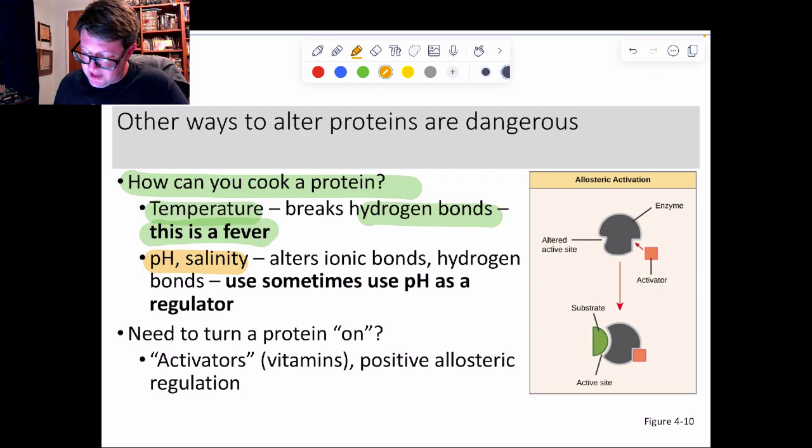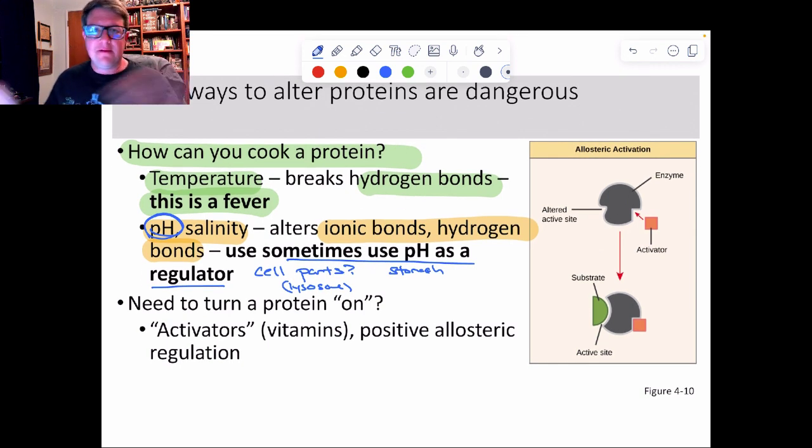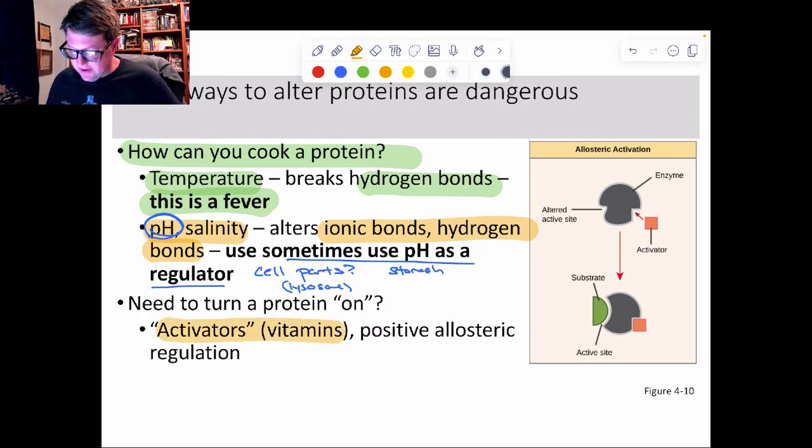Another option is we can use pH or salinity. And these are going to alter the ionic bonds or the hydrogen bonds. Salinity isn't something that we really use, but we use pH quite a bit. So pH we actually use as a regulator. So we have parts of our cells where we can worry about this, namely something called the lysosome. That's where we would see this occur. You would also see this in things like the stomach. If you happen to have a stomach, that's where we actually use pH manipulation to turn certain enzymes on and turn certain ones off. I already mentioned how we could have the activators or those coenzymes. The most famous of all those coenzymes are what we call vitamins. That's why you need to have your vitamins. They usually help your enzymes work. And that's what this one here is showing. So this is a positive version of it all.